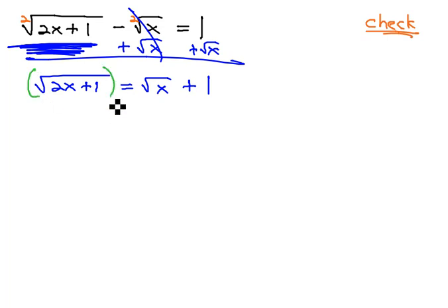Now, at this point, we can clear the one radical by squaring both sides. As we do on the left side, the squared gets rid of the square root, leaving us with 2x plus 1 equals...